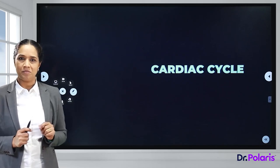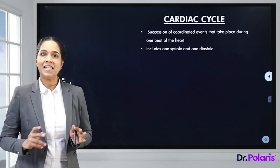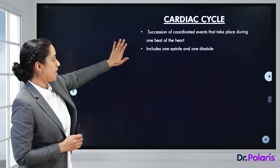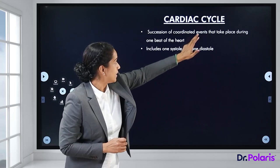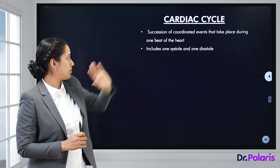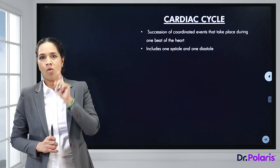Our heart beats 115,000 times in a day, and between each beat there is a series of successive cyclic changes happening in your heart — that is exactly what we are going to discuss under cardiac cycle. The cardiac cycle is a succession of coordinated events that take place during one beat of the heart, and it includes one systole and one diastole.